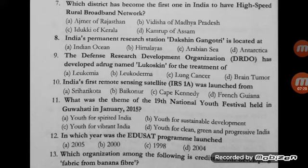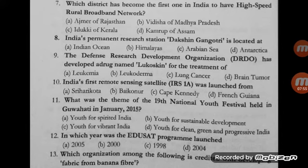Question number 11: what was the theme of the 19th National Youth Festival held in Guwahati in January 2015? Options: Youth for Spirited India; Youth for Sustainable India; Youth for Vibrant India; Youth for Clean, Green and Progressive India. The correct option is D — Youth for Clean, Green and Progressive India — and its main aim was to spread national integration and harmony.